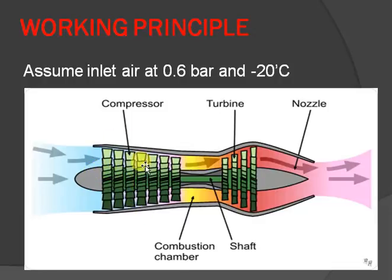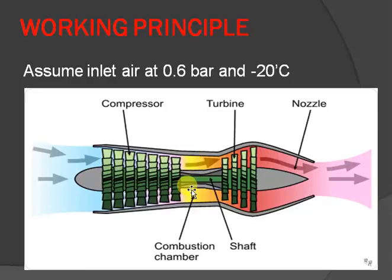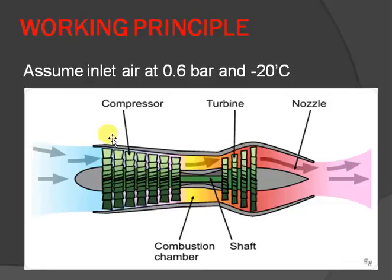The pressurized gas then enters into the compressor, which further compresses the air to high pressure. The high-pressure gas is then passed to the combustion chamber, where combustion takes place. The air and fuel mix together inside the combustion chamber, and the combustor gas is expanded through the turbine.